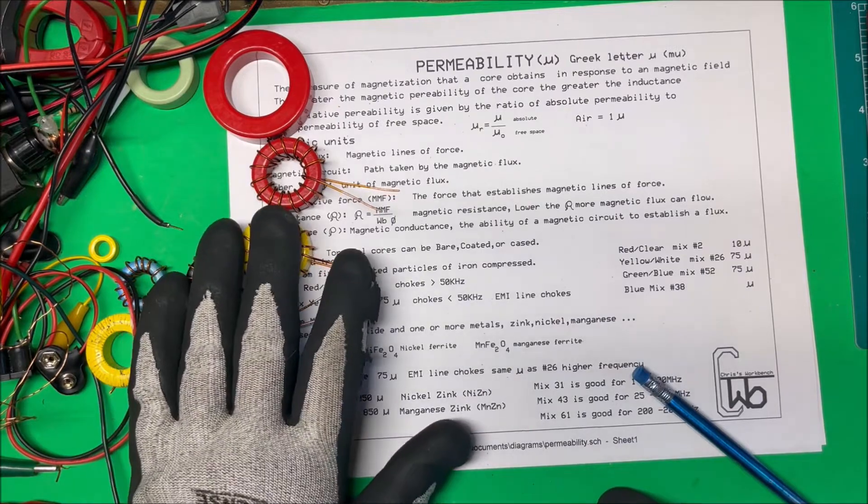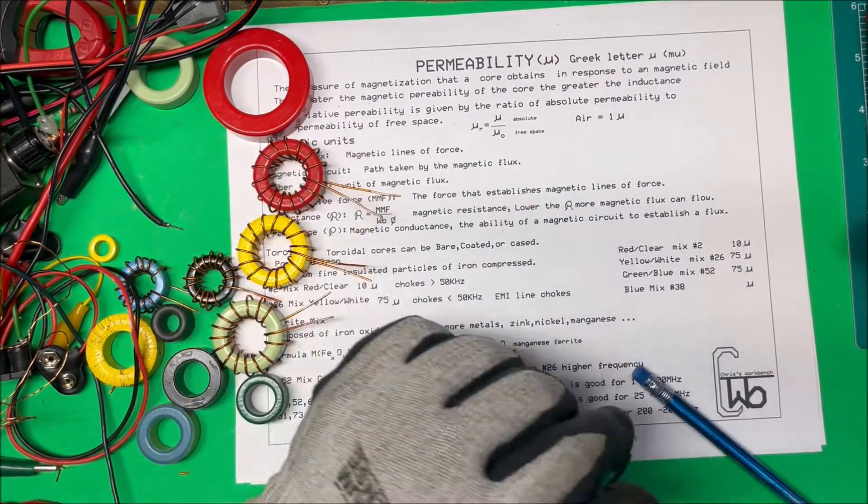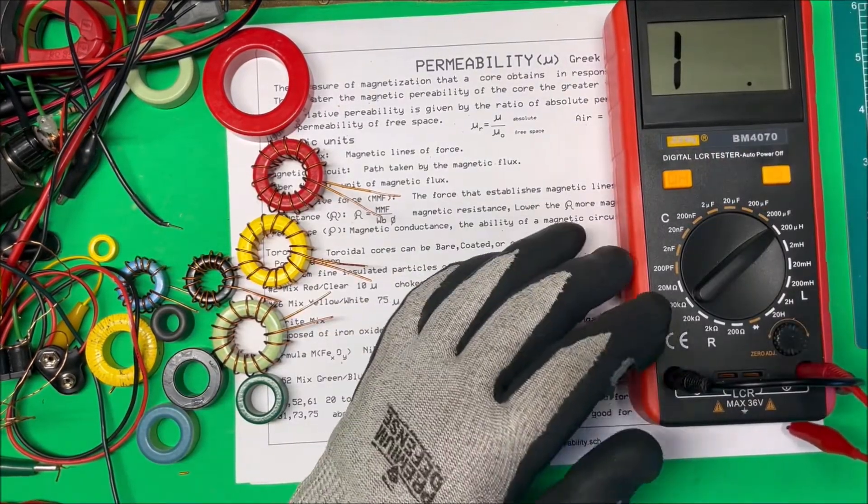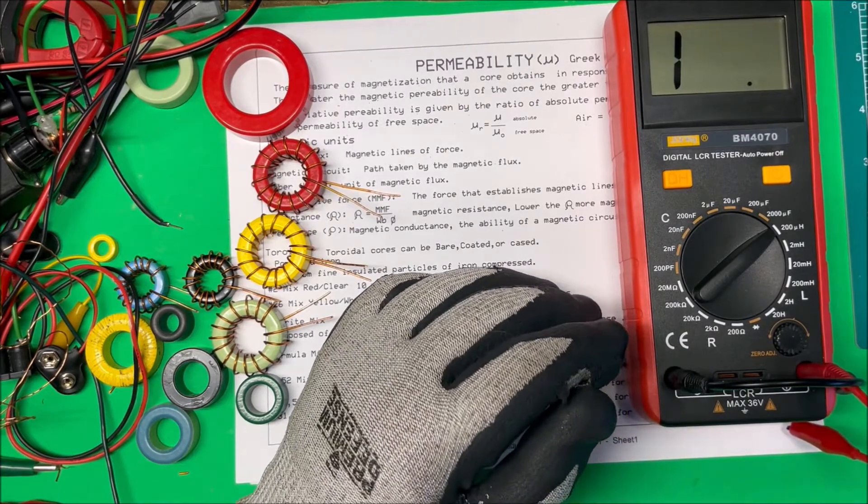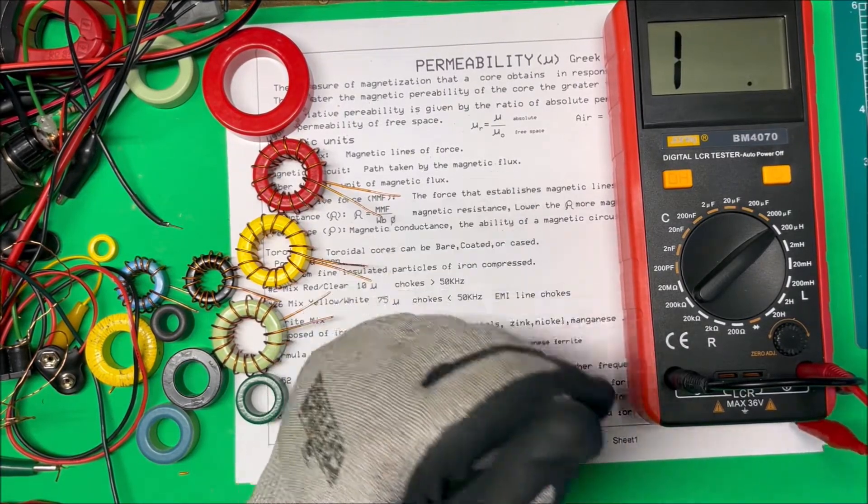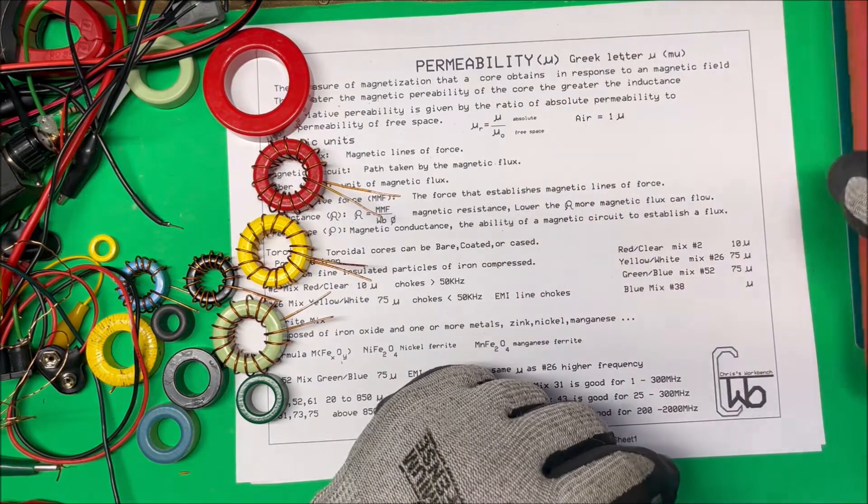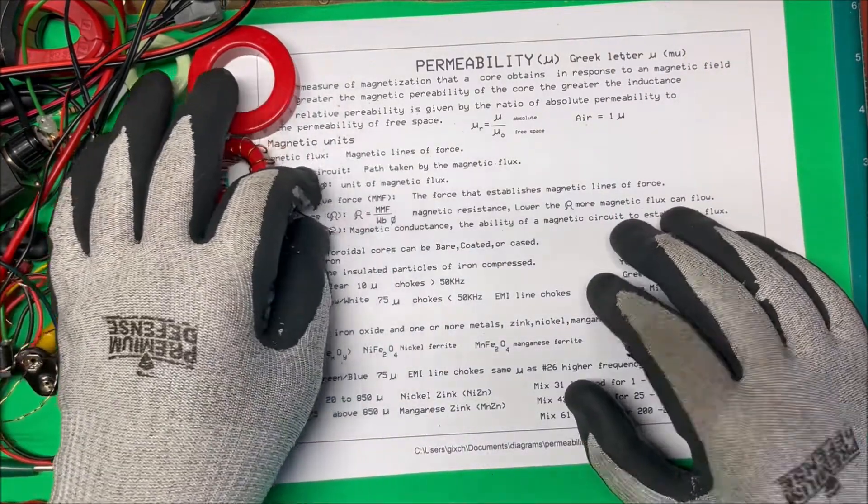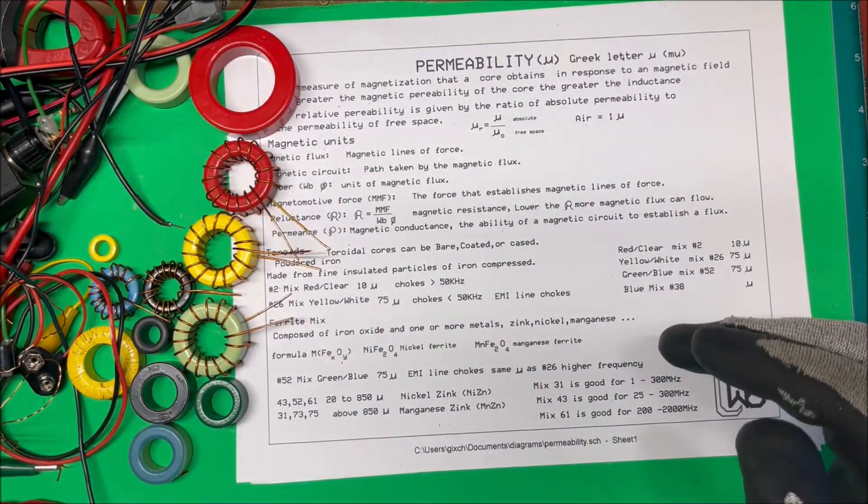Now, these are all frequency-based too. So this meter here, I think it only puts out one kilohertz frequency, but some of them will get a higher frequency. But anyway, that's permeability. And thank you.